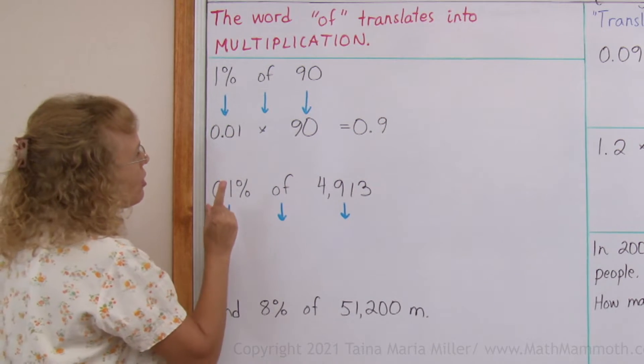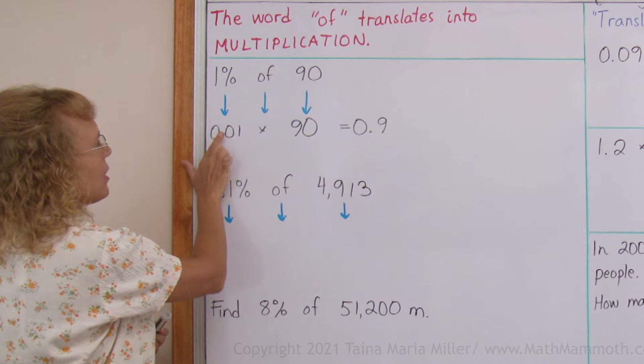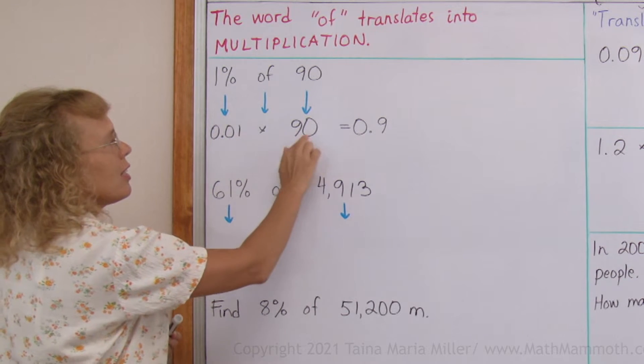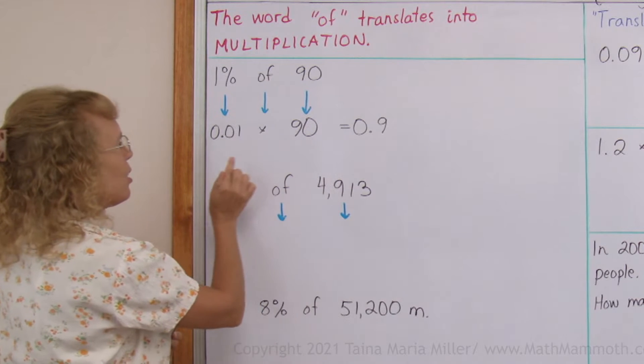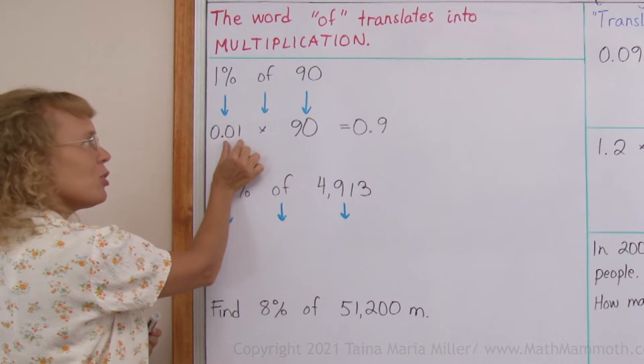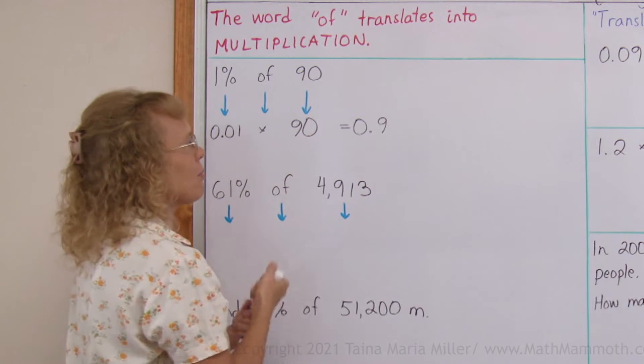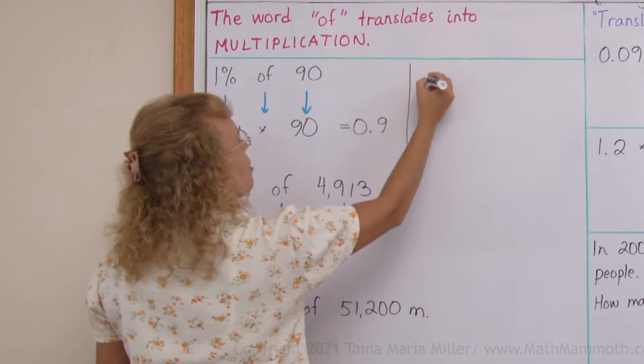If you use decimal multiplication you would multiply as if there was no decimal point. You would multiply 1 times 90 equals 90 and then you would have to figure that it has to have two decimal digits. Your answer needs to be two decimal digits.